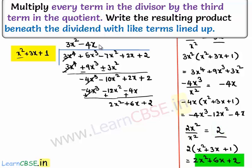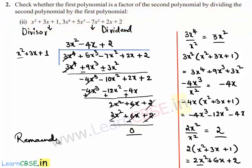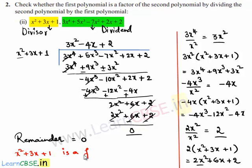The quotient term 2 is written, and the product 2x² plus 6x plus 2 is written here. On subtracting, 2x² and minus 2x² cancel, 6x and minus 6x cancel, and 2 and minus 2 cancel, so this becomes 0. The remainder is 0, therefore x² plus 3x plus 1 is a factor of 3x⁴ plus 5x³ minus 7x² plus 2x plus 2.